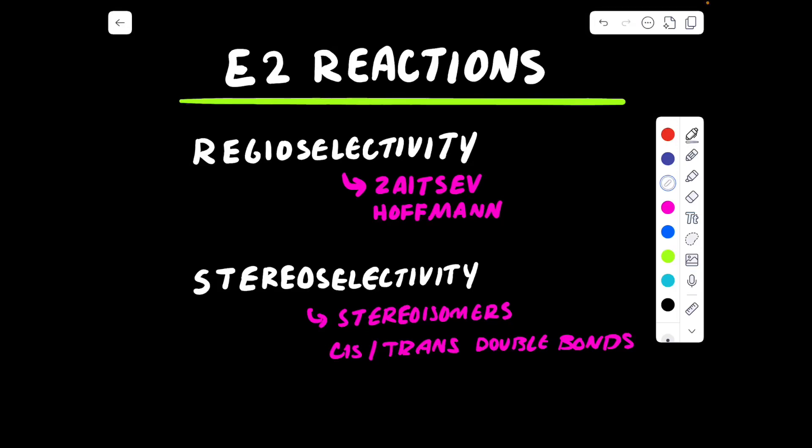Hello guys and welcome back to my YouTube channel. In this video we're going to be diving deeper into E2 reactions, so elimination type 2 reactions that I went over in my previous video. We're going to be talking about how they are regioselective, so the size of the base can determine if you're going to get the Zaitsev or the Hoffman product, and how E2 reactions are also stereoselective — meaning we have to decide if the double bond is going to be cis or trans at the end of our reaction.